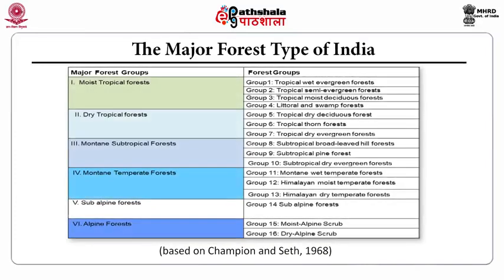In this table, the major forest types of India are described. Group 1 is the tropical wet evergreen forests. Group 2, the tropical semi-evergreen forests. Group 3, tropical moist deciduous forests. Group 4, littoral and swamp forests. Group 5, tropical dry deciduous forests. Group 6, tropical thorn forests. Group 7, tropical dry evergreen forests.